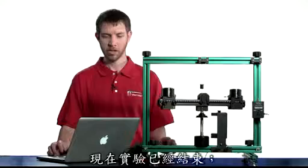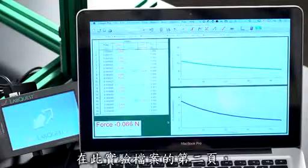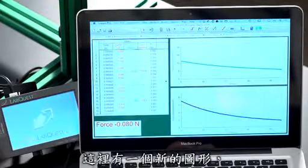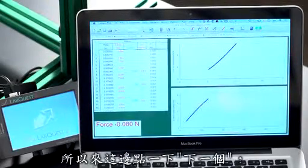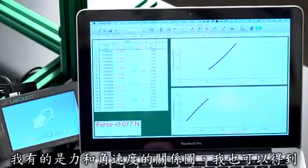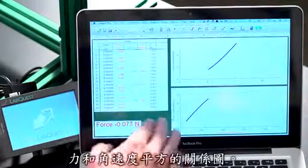Now that the experiment is finished, we can go ahead and take a look at our results. On page two of this experiment file, there is a new view of the graph. So go ahead and click on next. And you'll see that I've got two views of the data here. I've got the force versus the angular velocity. And I've also got the force versus the square of the angular velocity.